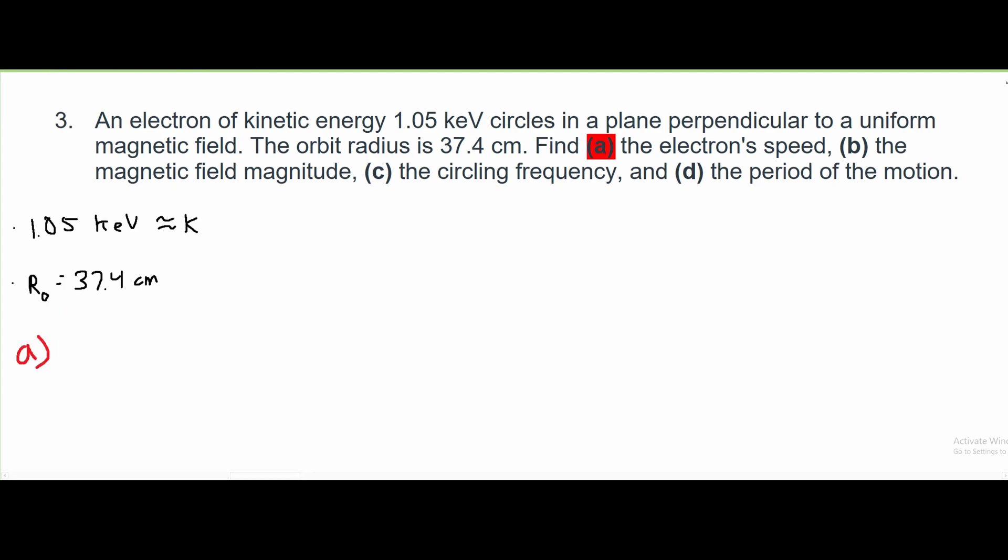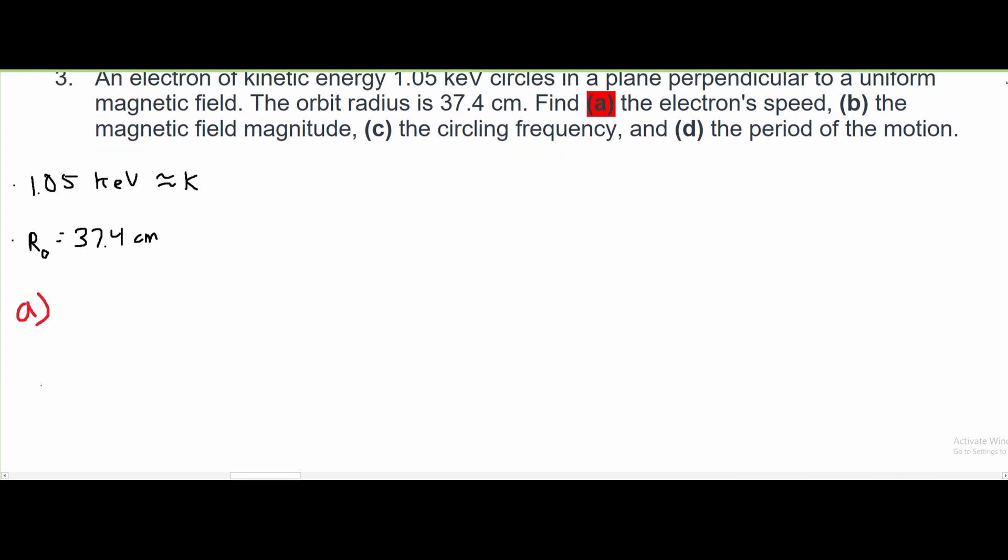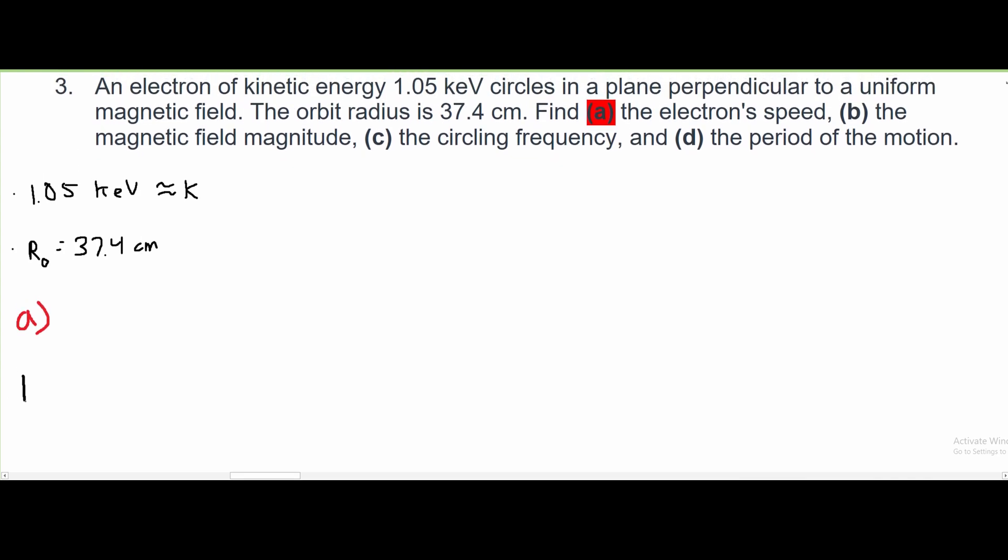In part A, we're going to use the formula k equals 1/2 m v squared, with mass being the mass of the electron. We're asked to find the electron's speed, so we are going to look for v. That means we're going to have to move everything over to our left side. So we're going to have 2k over m, and square root both sides to get v by itself.